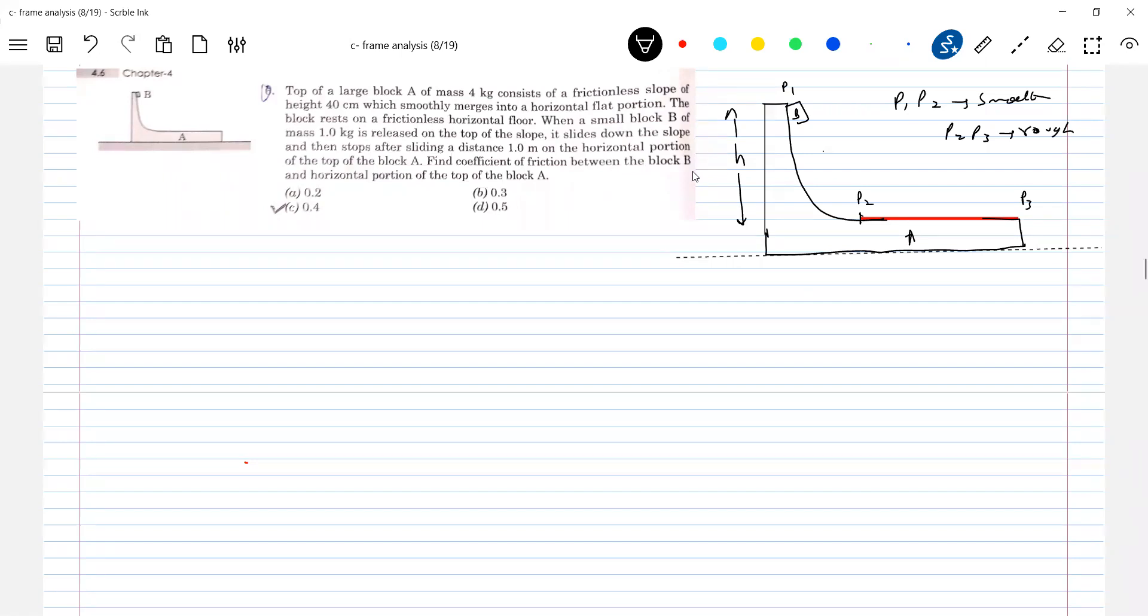Oh, diagram needed. I will show it here. Okay, so it will be... So the block will land now, it will have velocity V1, this will have velocity V2.